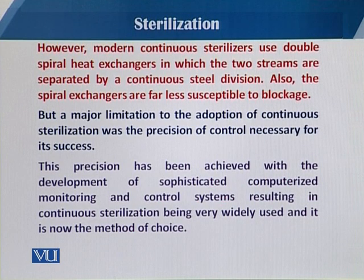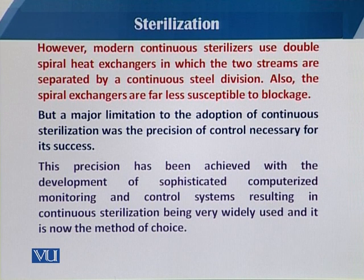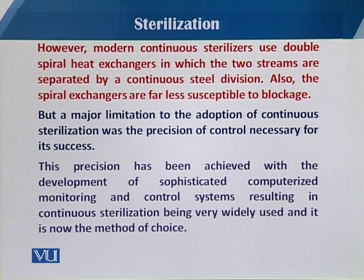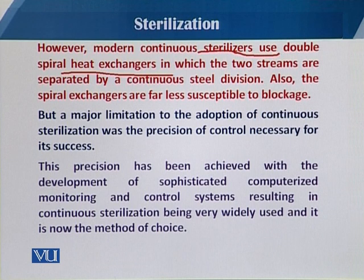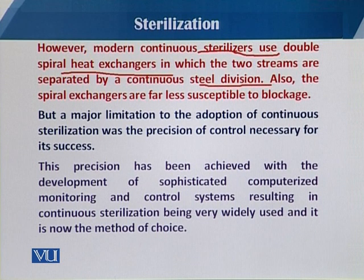Modern continuous sterilizers use double spiral heat exchangers in which the two streams are separated by continuous steel divisions, eliminating the risk of mixing sterilized and unsterilized streams. Spiral heat exchangers are also far less susceptible to blockage compared to plate heat exchangers.